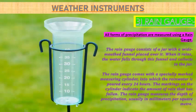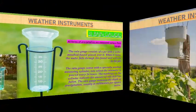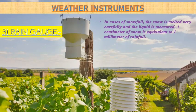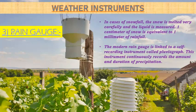The markings on the cylinder indicate the amount of rain that has fallen. The rain gauge measures the depth of precipitation, usually in millimeters per square meter. In cases of snowfall, the snow is melted carefully and the liquid is measured — 1 cm of snowfall is equivalent to 1 mm of rainfall. The modern rain gauge is linked to a self-recording instrument called a pluviograph, which continuously records the amount and duration of precipitation.